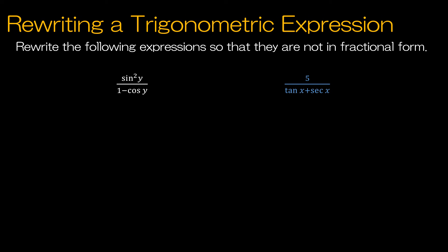Now we'll simplify a fraction so the final solution is no longer in fractional form. For sine squared y over one minus cosine y, I rewrite sine squared y as one minus cosine squared y. Now I have a perfect square minus a perfect square — factoring the difference of squares gives (1 + cosine y)(1 − cosine y), which cancels the denominator. The final answer is simply one plus cosine of y.